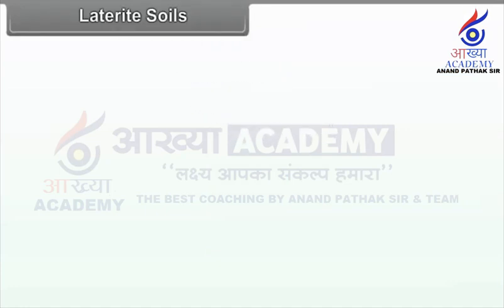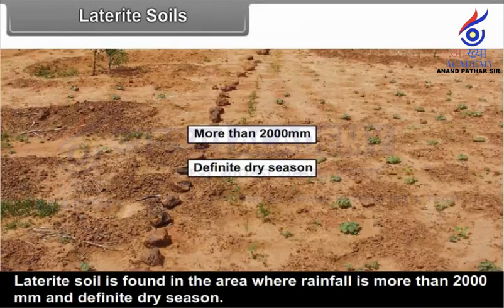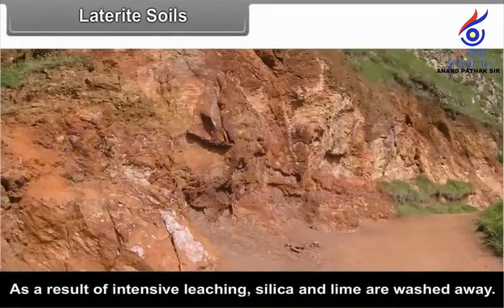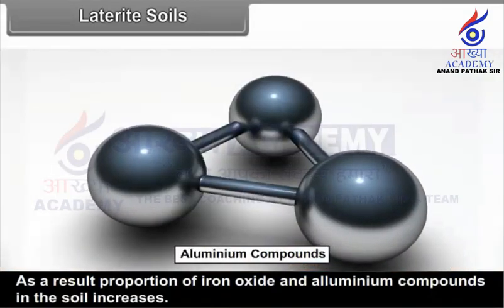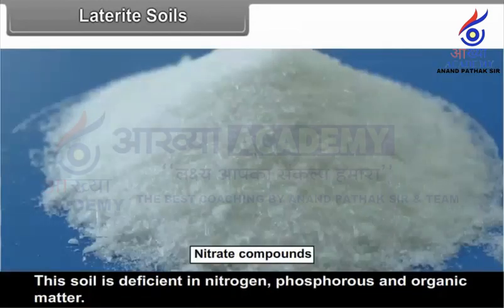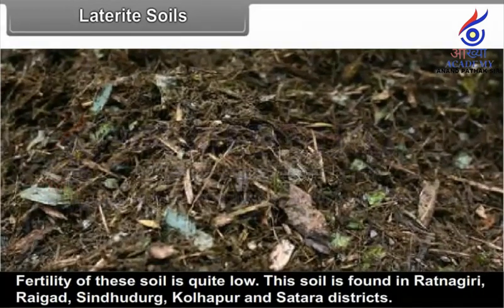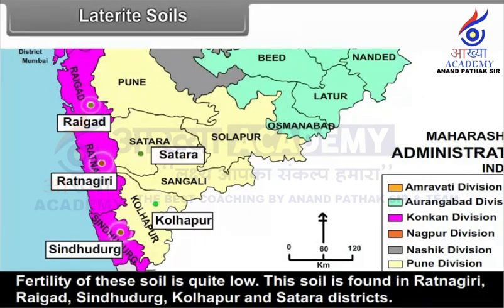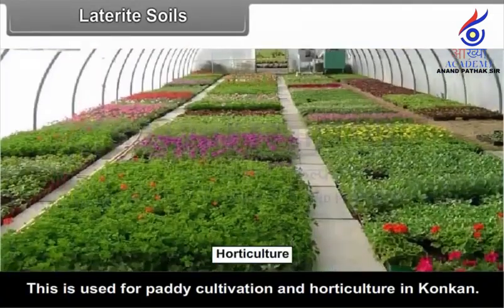Laterite Soils. Laterite soil is found in areas where rainfall is more than 2000 mm with a definite dry season. As a result of intensive leaching, silica and lime are washed away, and the proportion of iron oxide and aluminum compounds in the soil increases. This soil is deficient in nitrogen, phosphorus and organic matter; fertility of these soils is quite low. This soil is found in Ratnagiri, Raigad, Sindhudurg, Kolhapur and Satara districts. This soil is used for paddy cultivation and horticulture in Konkan.